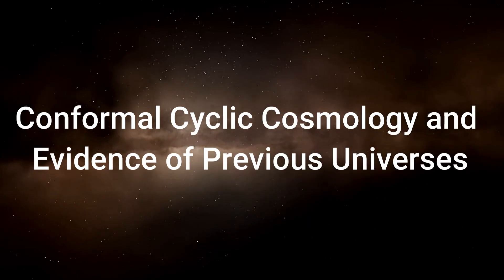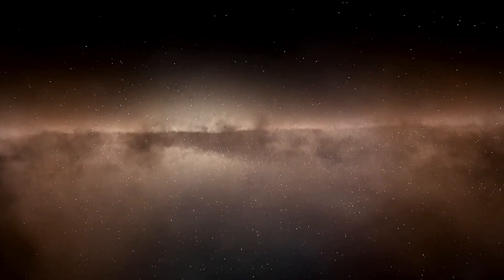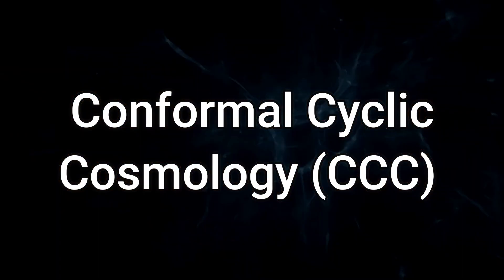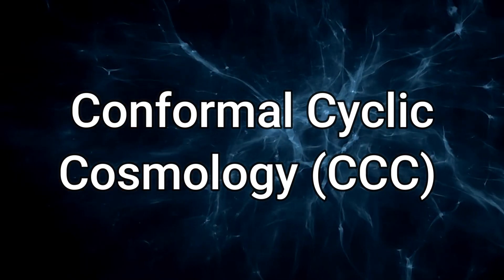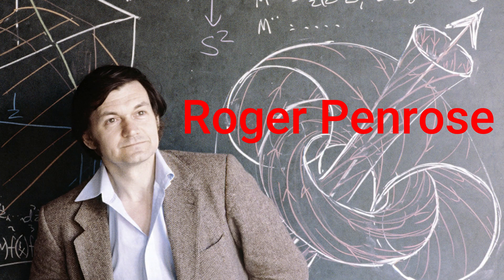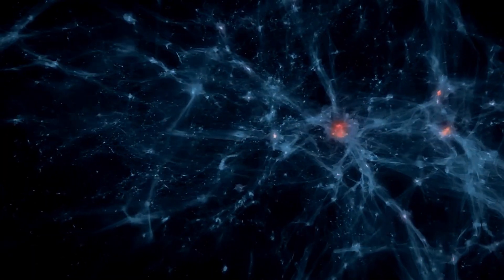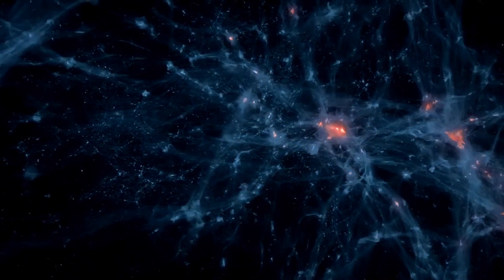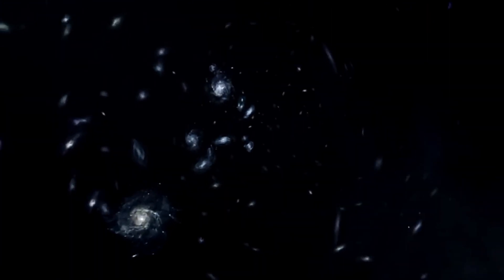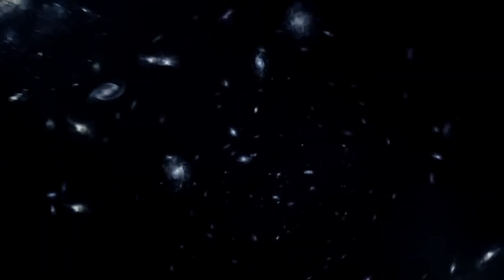One of the most intriguing ideas in modern cosmology is the theory of conformal cyclic cosmology, CCC, proposed by physicist Roger Penrose. This theory challenges the notion that the Big Bang was the beginning of everything. Instead, CCC suggests that the universe goes through infinite cycles of expansion and contraction, with each Big Bang marking the end of one universe and the beginning of another. In other words, our universe is not a unique, one-time event, but part of an eternal, self-replicating cycle of universes.